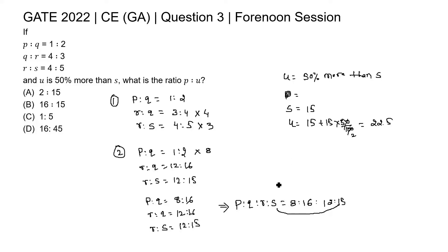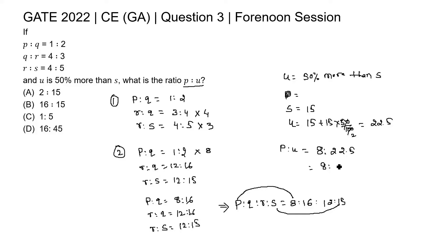We need to find the ratio between P and U. The corresponding value of P is 8, and U is 22.5, which can be written as 45 by 2. So the ratio is 8 is to 45/2, which gives 16 is to 45. The ratio between P and U is 16 is to 45, which is given in option D. So option D is the correct answer.